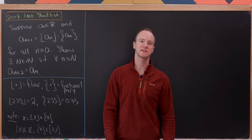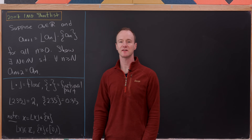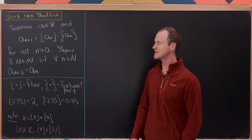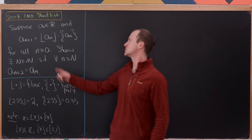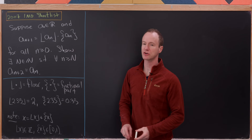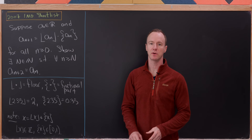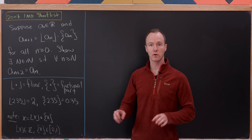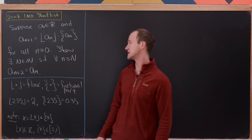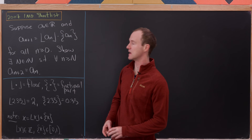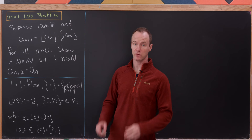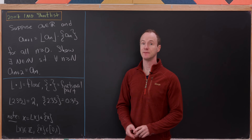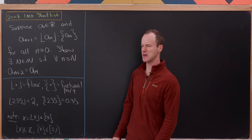Let's look at a nice problem that was shortlisted for the 2007 International Math Olympiad. Suppose we've got an arbitrary real number a₀, and we recursively define the sequence aₙ via the recursion: a_{n+1} equals the floor of aₙ times the fractional part of aₙ.